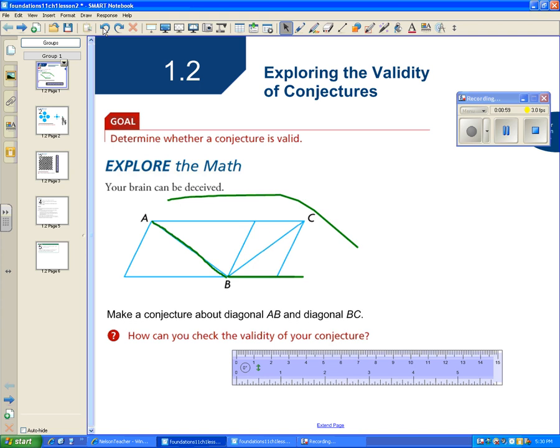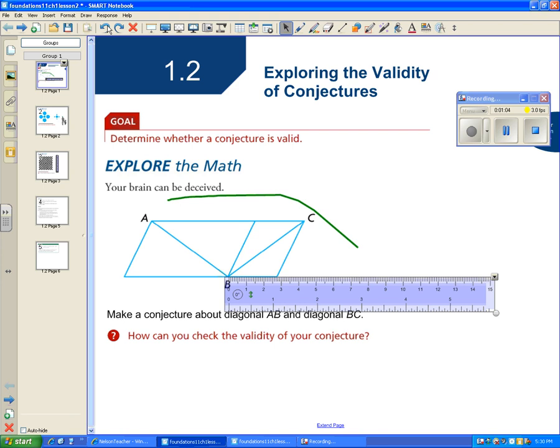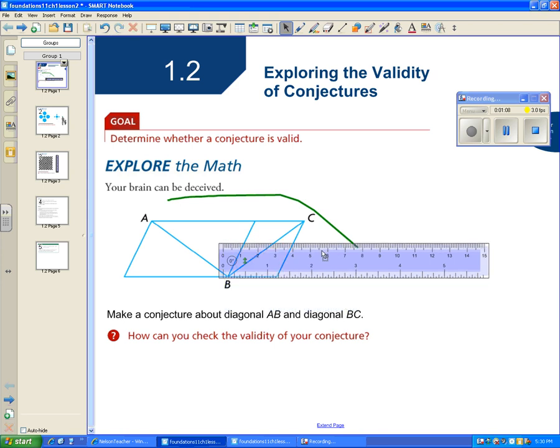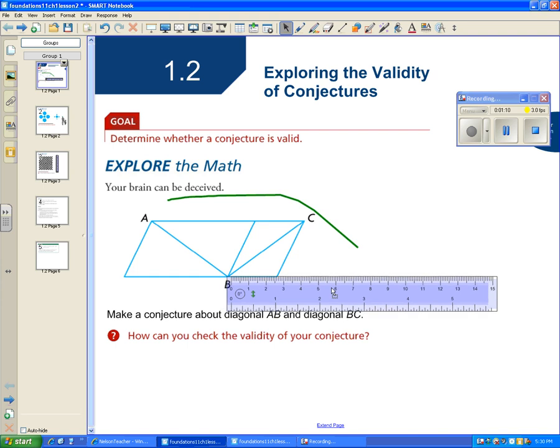What we're going to do to test this conjecture, how we could test if our initial thought is we could actually take a ruler. And that's just what we're going to do is we are going to take this ruler and we are going to measure on my smart board here.